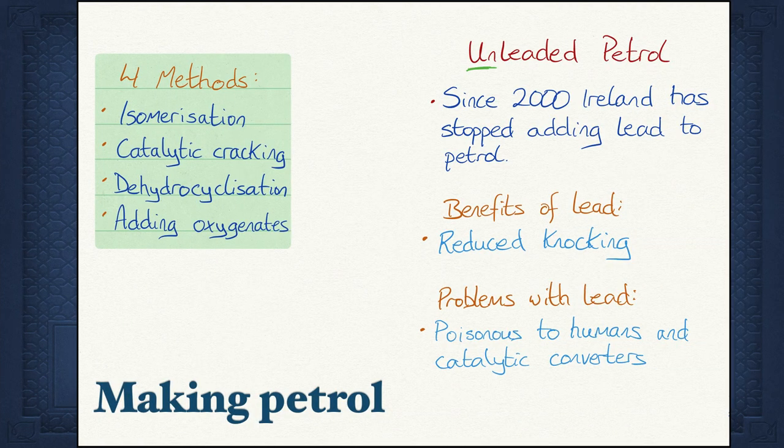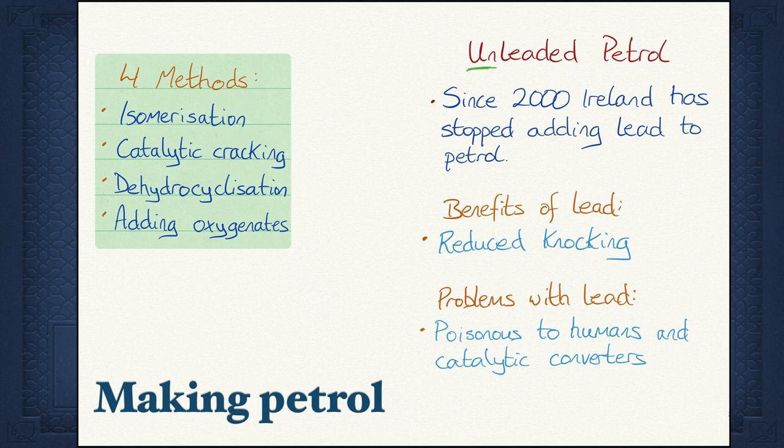Chemists often have to process fuel to increase its efficiency. In the past, a lead compound, tetraethyl lead, was added to increase the octane number. However, since 2000, Ireland has stopped adding lead to petrol due to it being toxic to humans and also poisoning catalytic converters. This is why petrol is marked as unleaded at gas stations. Chemists know of four methods to increase the octane number: isomerisation, catalytic cracking, dehydrocyclisation, and adding oxygenates. We will go through each of these in some detail.